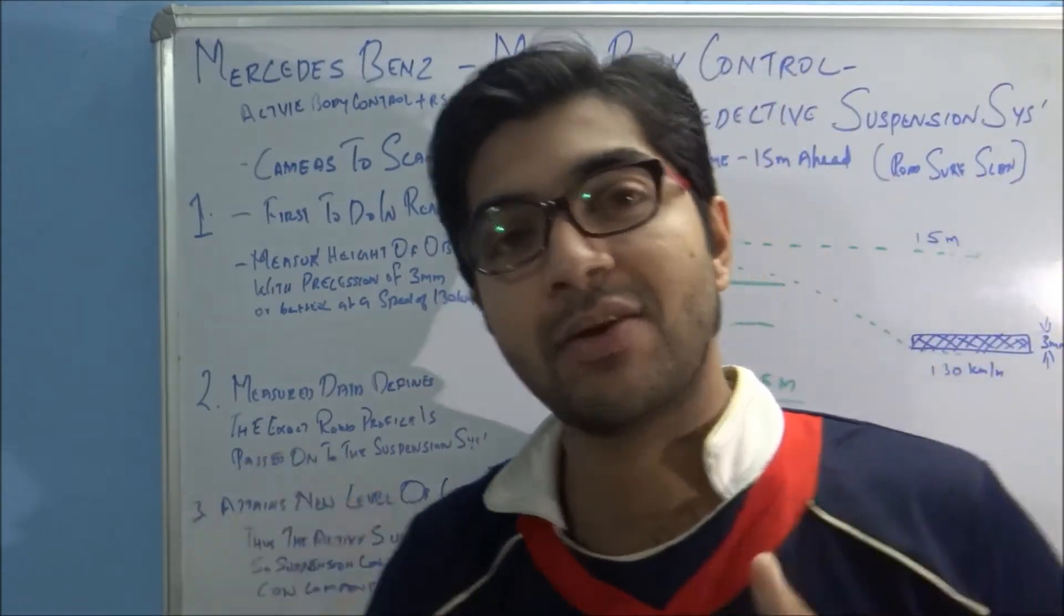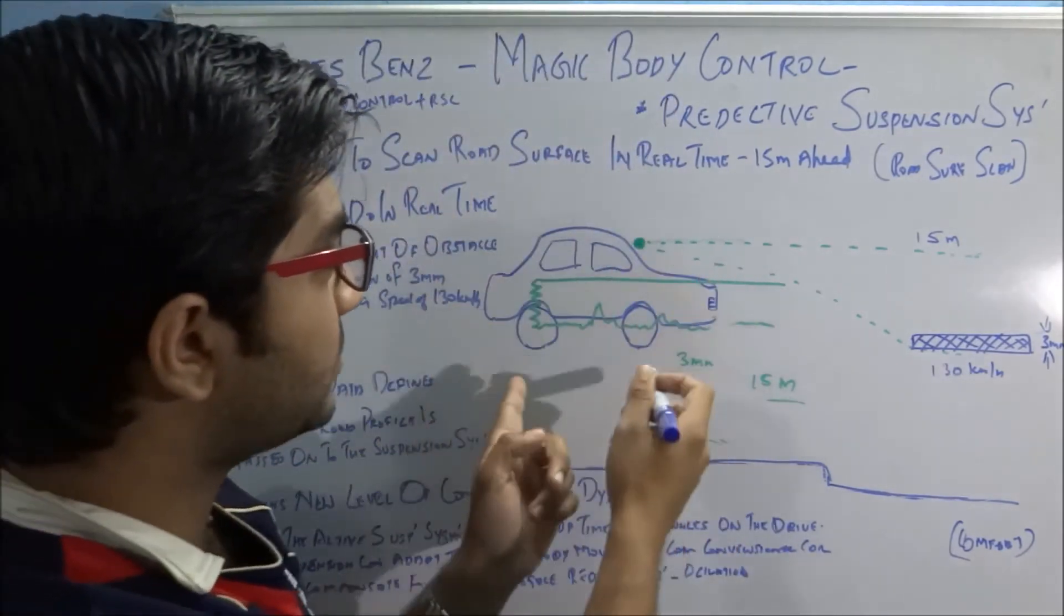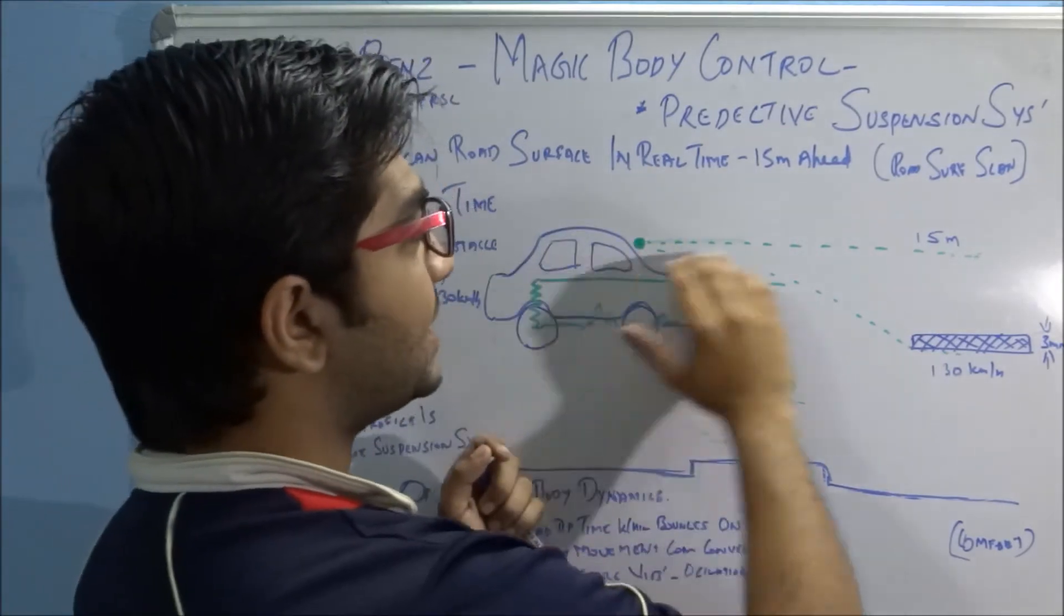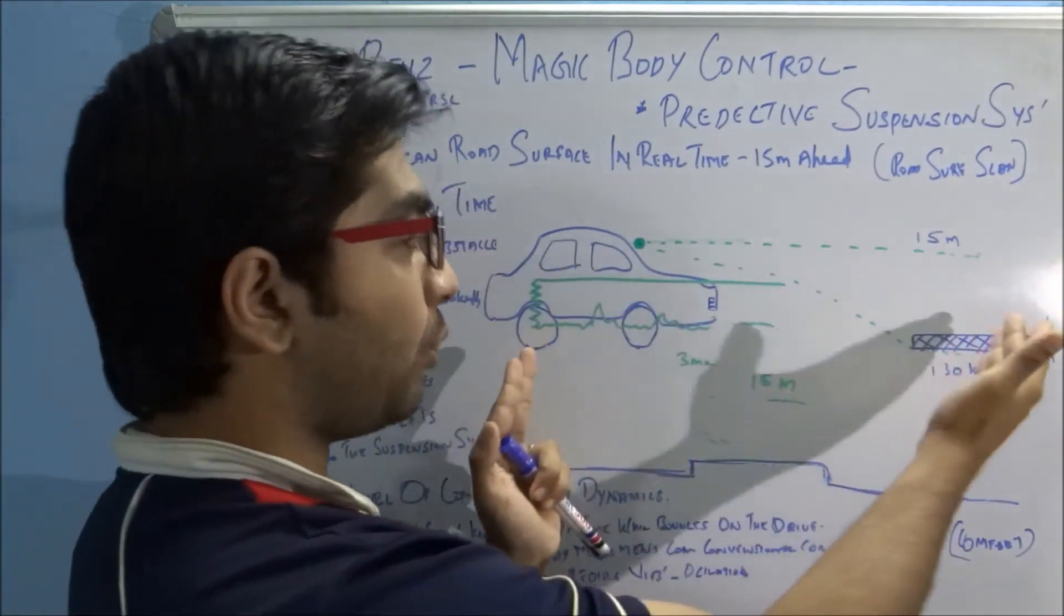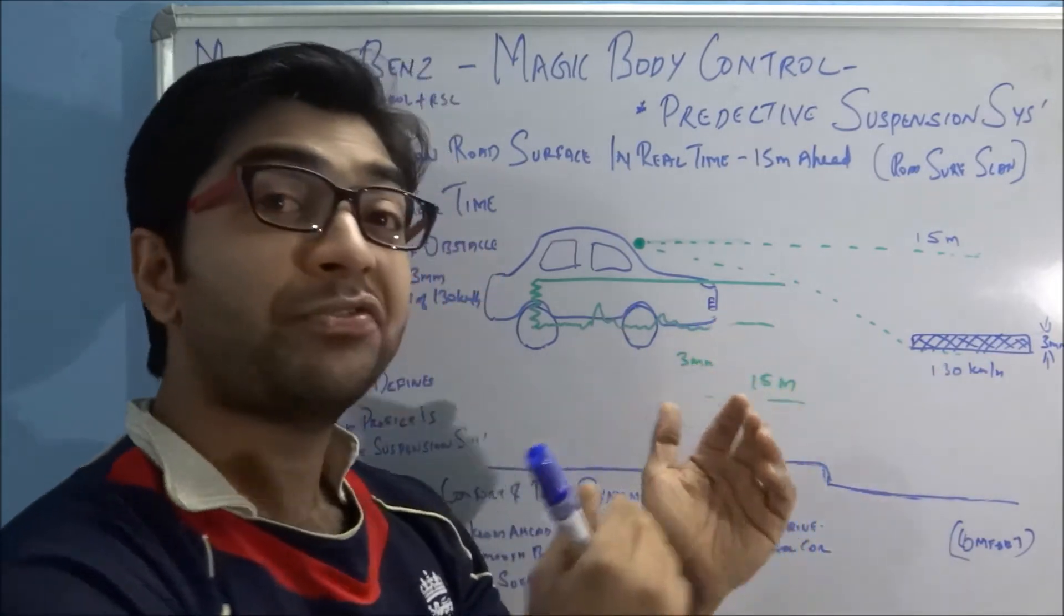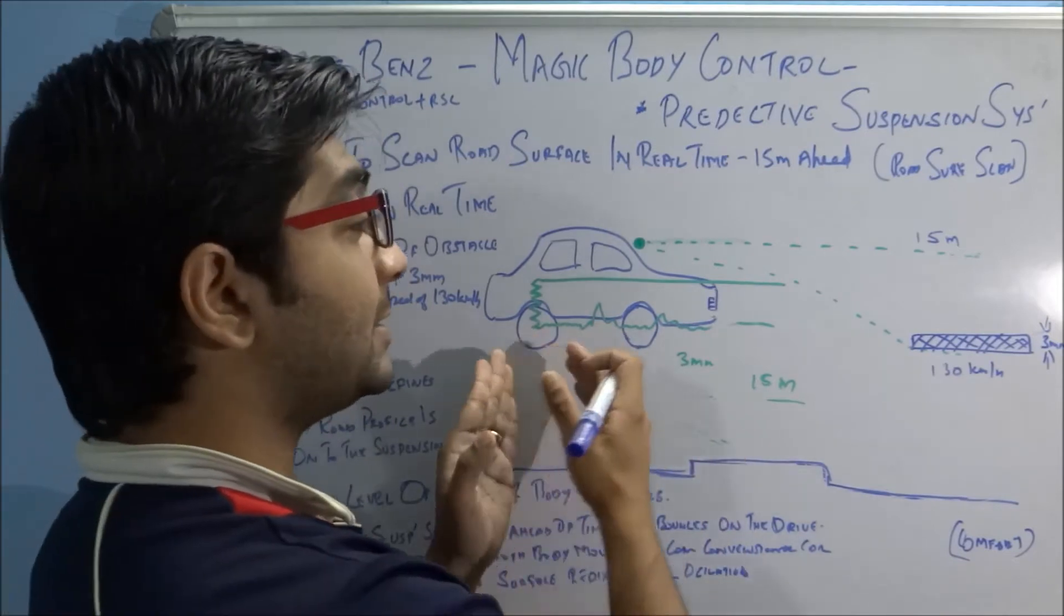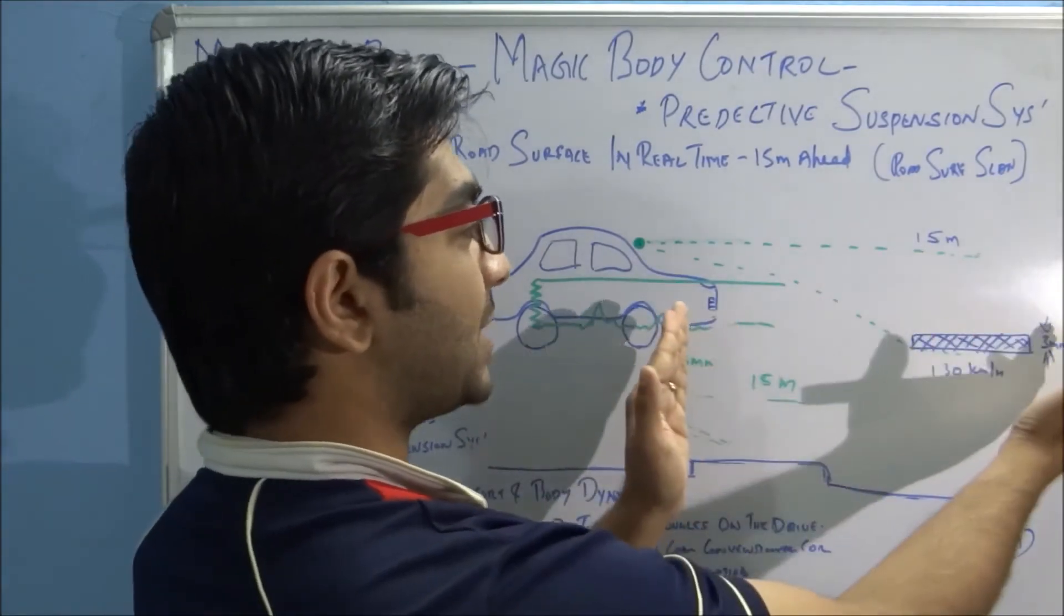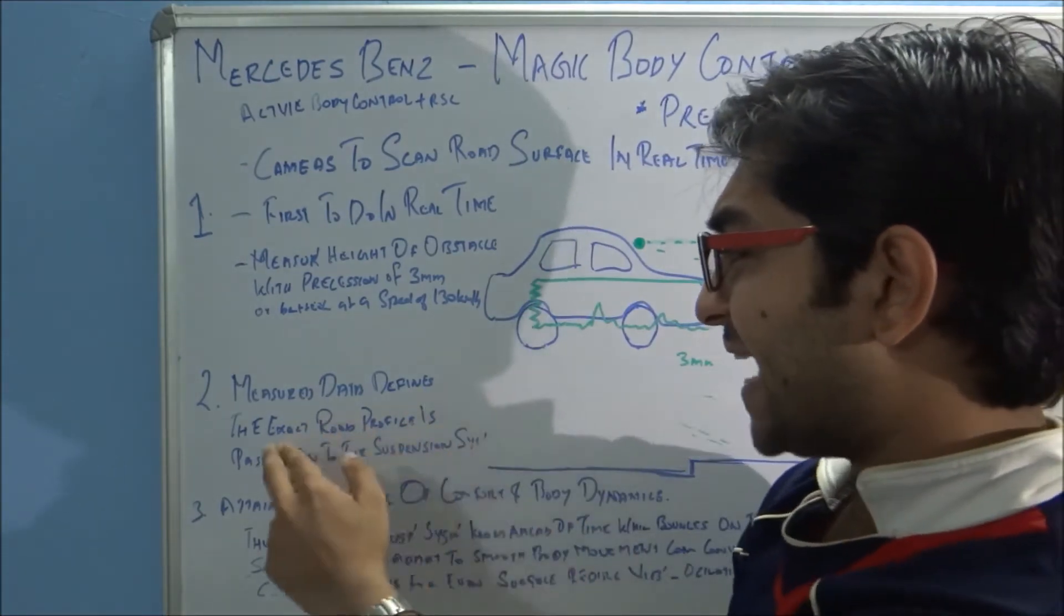The vehicle has a camera at the top, two cameras actually, which can sense or take photographs up to 15 meters ahead of the vehicle. It scans and gets the data because the obstacle can be measured at a precision of 3 millimeters, even at a speed of 130 kilometers per hour. Even when the vehicle is going at 130 kilometers per hour, with 3 millimeter precision, about 15 meters of distance ahead can be scanned.